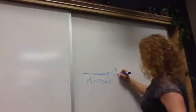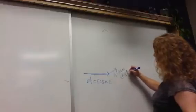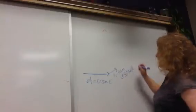This one is D2, 5.0 meters at 30 degrees north of east. So now I'm ready to do my resultant.